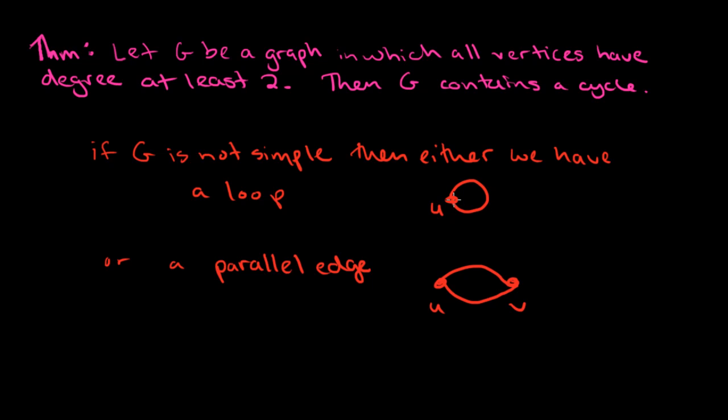So this loop is, in fact, a cycle of length 1. It's like the most trivial type of cycle. And this parallel edge is a cycle of length 2, but it's, again, a very trivial example. So this is what happens if G is not simple, and normally I don't want to consider those types of graphs anyways. But even if G was not simple, then we still have the conclusion. G contains a cycle.